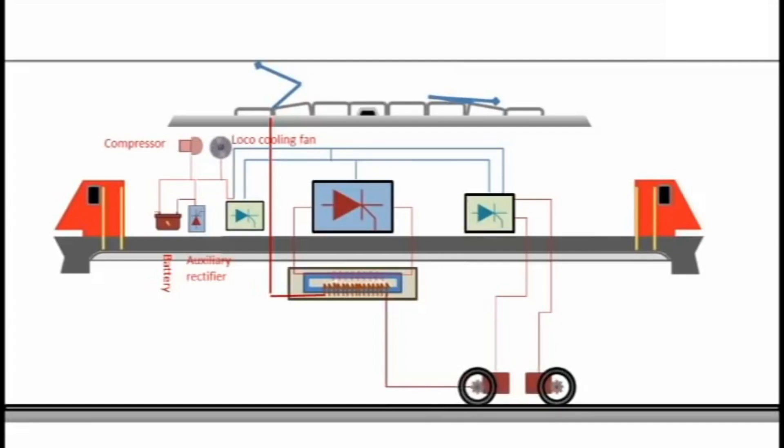A compressor, also powered by the auxiliary inverter, supplies air at the required pressure to operate the pantograph. A battery provides the power for startup operations and also supplies essential circuits. The battery is usually connected across the DC controlled supply circuit.